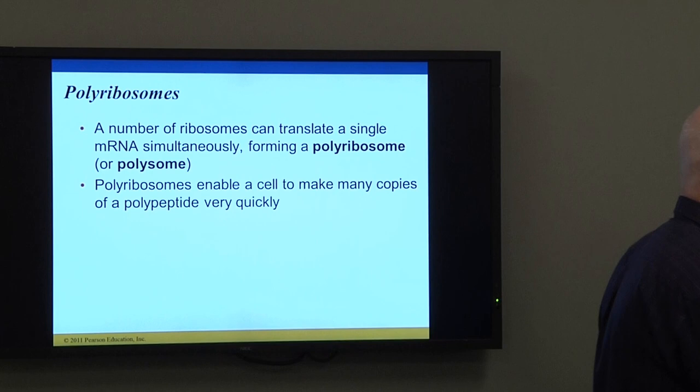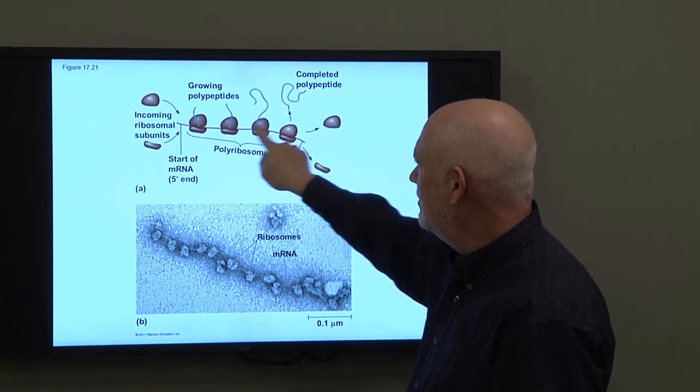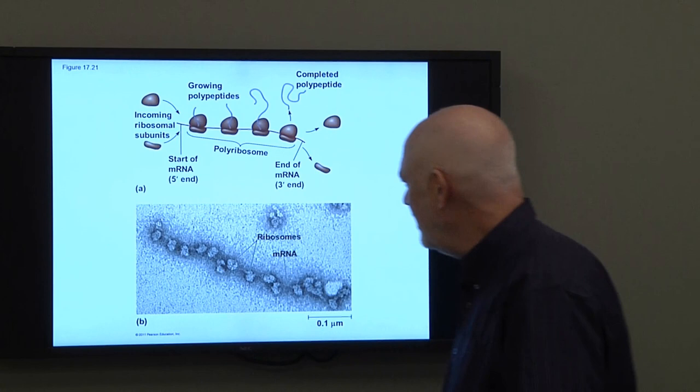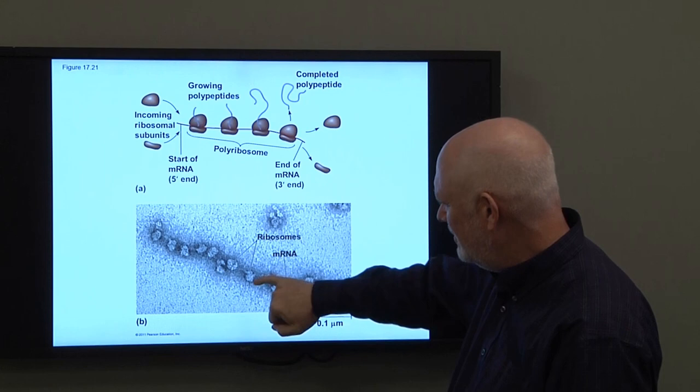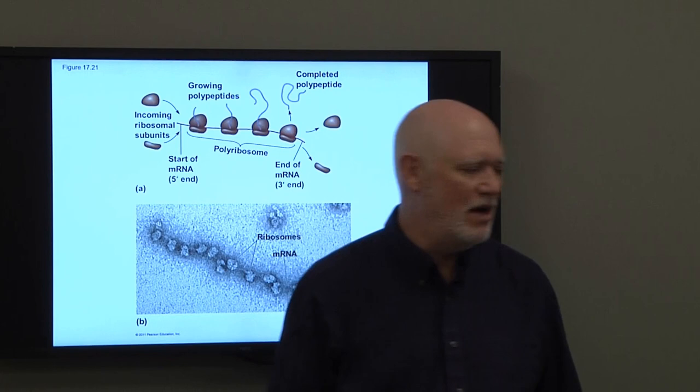Here's an example showing polyribosomes in a drawing and an electron micrograph. Multiple ribosomes follow along behind each other on the same messenger RNA, making multiple copies of the same protein. On some of these in the electron micrograph, you can even see the little tails of the polypeptide coming off of each of the ribosomes.